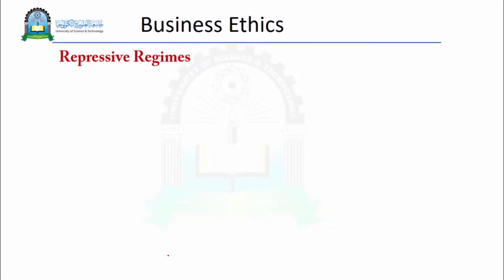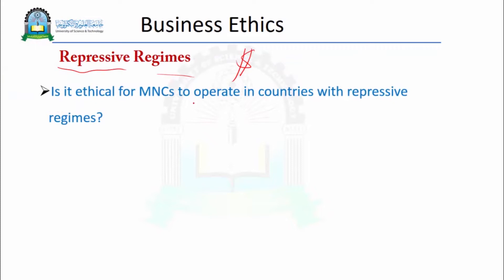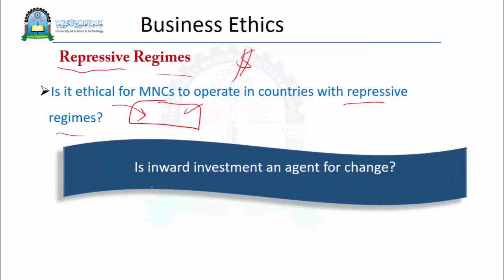What are the problems that companies may face ethically, not just legally? Sometimes companies may have an opportunity to generate profits by working in countries with repressive regimes. Is it ethical for multinational corporates to operate in countries with repressive regimes? What we mean by a repressive regime is a dictator kind of system controlling the country. Regarding business opportunities, companies may not really think of the regimes, as long as they generate profits. This is an example of an ethical issue that should be addressed.